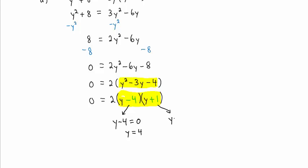We write y plus 1 equals 0. Subtracting 1 from both sides, we get y equals negative 1. Here are our two solutions.